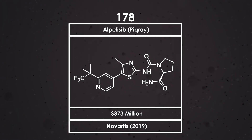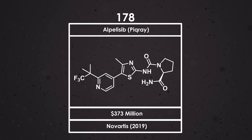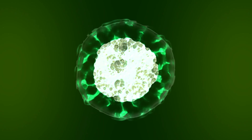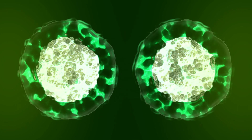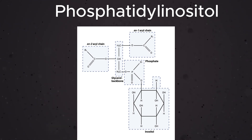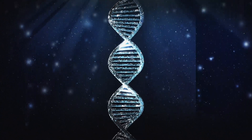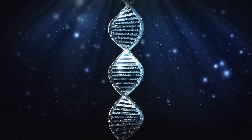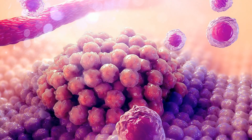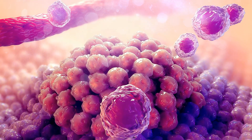Alpelisib is a compound which acts as a phosphatidylinositol 3-kinase inhibitor. Phosphatidylinositol 3-kinases are important enzymes in a variety of different cellular processes, such as cell division and cell death. Their function is to phosphorylate the free position of inositol, which allows signal transduction to take place. PIK3CA is a gene which encodes a subunit of the PI3K protein, and mutations to this gene are present in around 40% of breast cancers, making it the primary target for treatment of this disease.